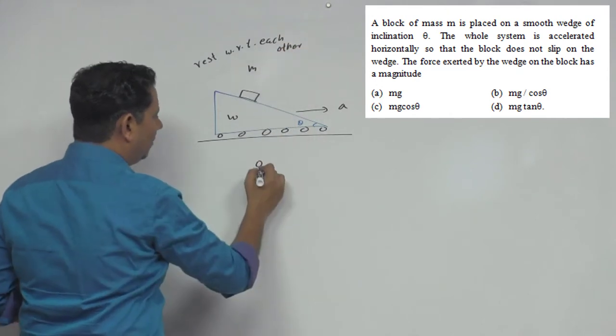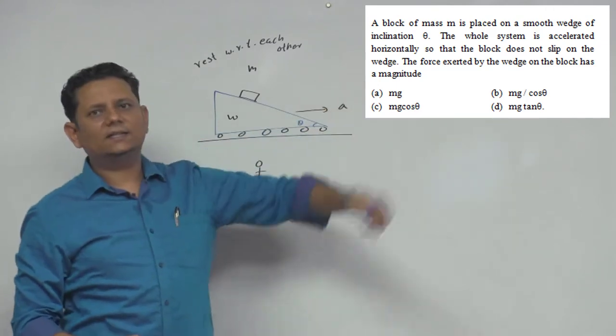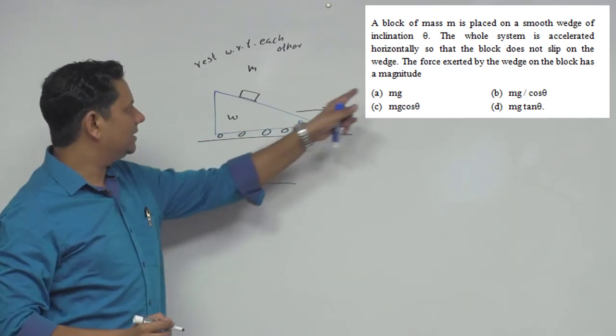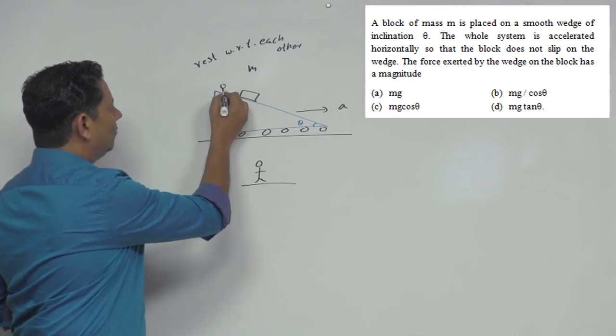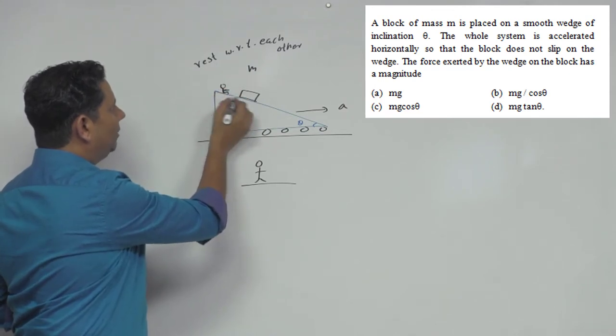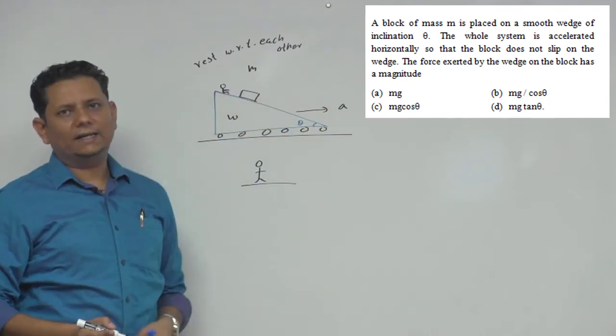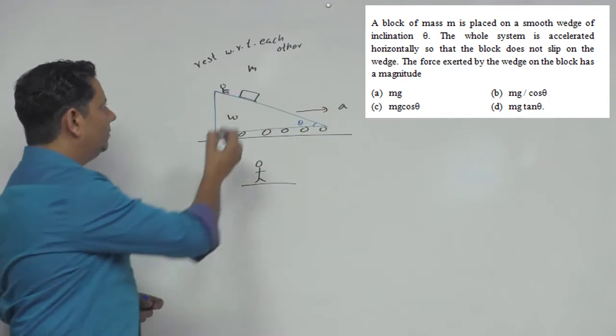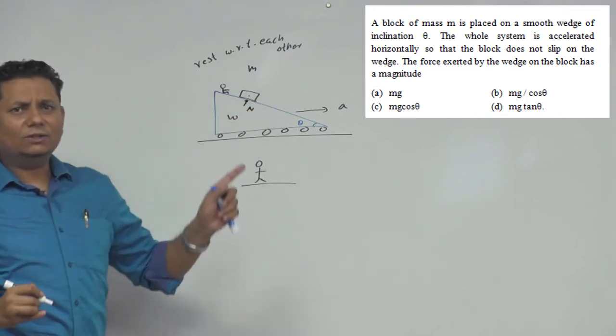If you look from the ground frame, you see the acceleration scenario. But if you look at the wedge frame, you see the block here and the block stays in place. In this case, we need to consider the normal force from the wedge.